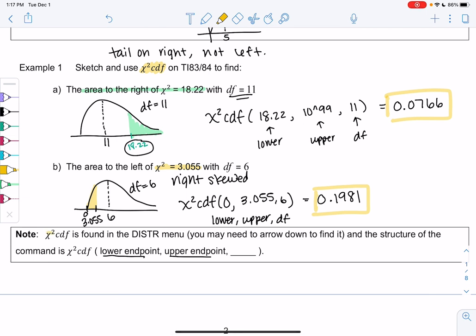And here's just directions for the chi-square function on the calculator. So it's in that distribution menu that we've been using a lot. Depending on your calculator, you might have to go farther down, so you can use those arrows to find it if you had trouble finding it. And it'll be lower, upper, degrees of freedom. So we'll use this function when we do some hypothesis tests in the next two sections.